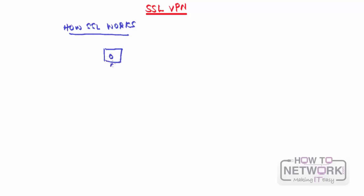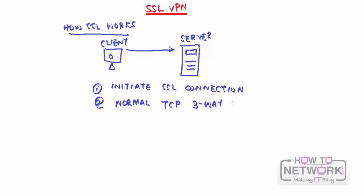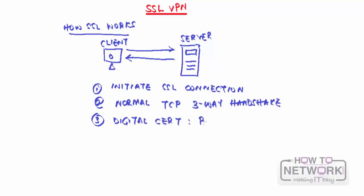Consider a client and a server. The first step is that the client initiates an SSL connection - for example by opening HTTPS instead of HTTP. They then follow the normal TCP three-way handshake. Once that is successfully completed, the server sends the client its digital certificate, which contains the server's public key.